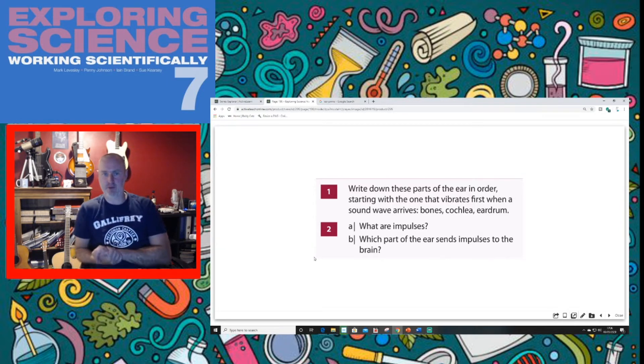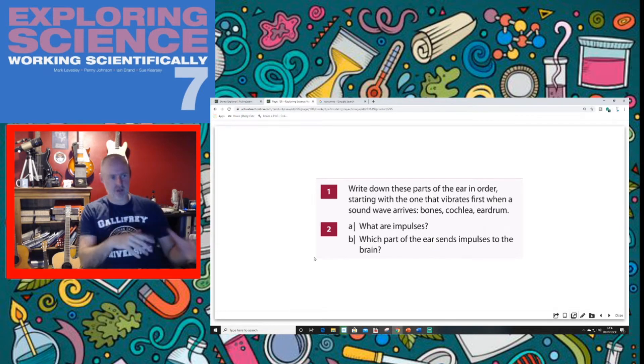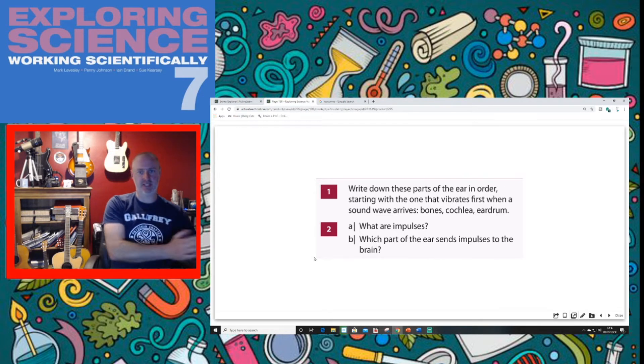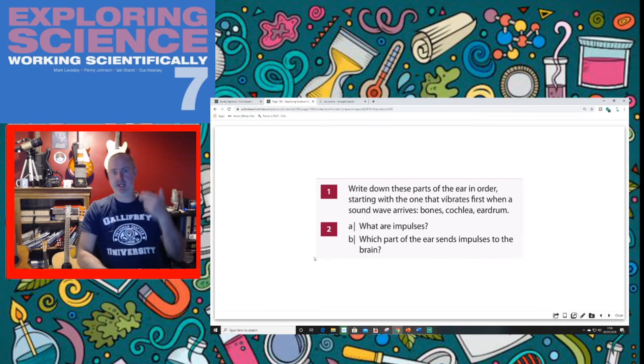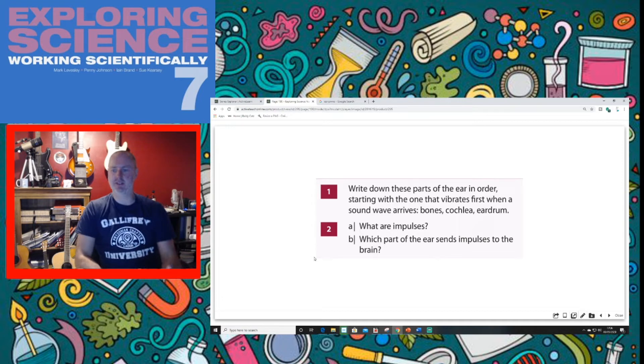Question two: what are impulses? That's a great question. I didn't use the term impulses. We talked about electrical signals being generated in the cochlea. When you're talking about the nervous system and electrical signals, the word impulse is often used to mean the electrical signals. So when you've got nerves in your body and messages are sent along your nerves, we can say electrical signals are sent along your nerves or we can say nerve impulses or just impulses are sent. So the impulse is the message that travels down your nerve.